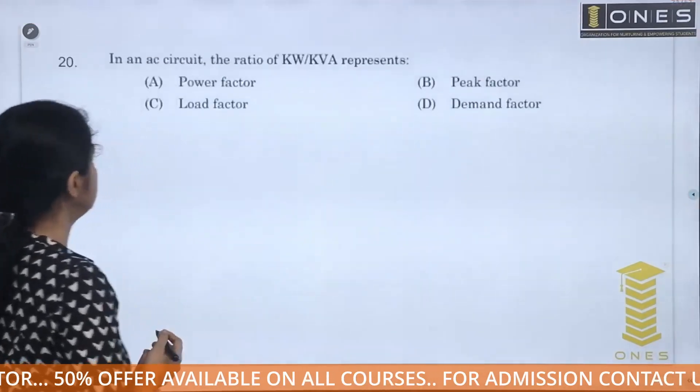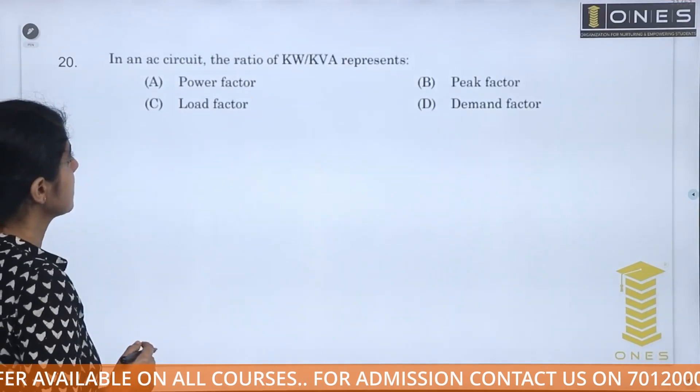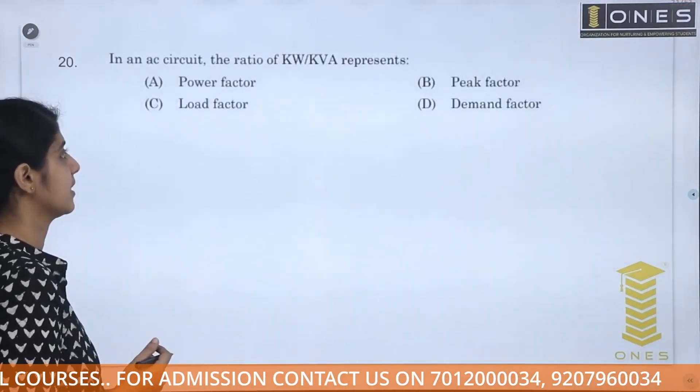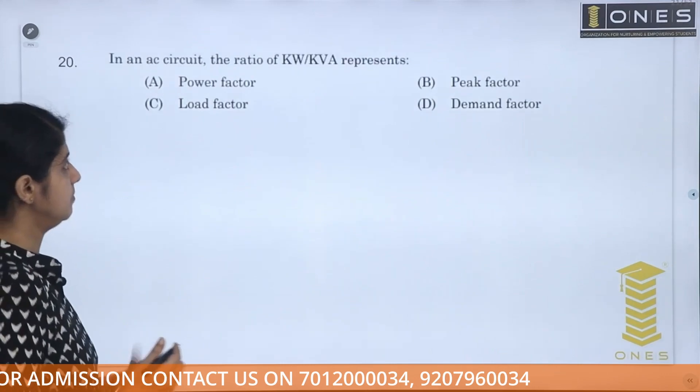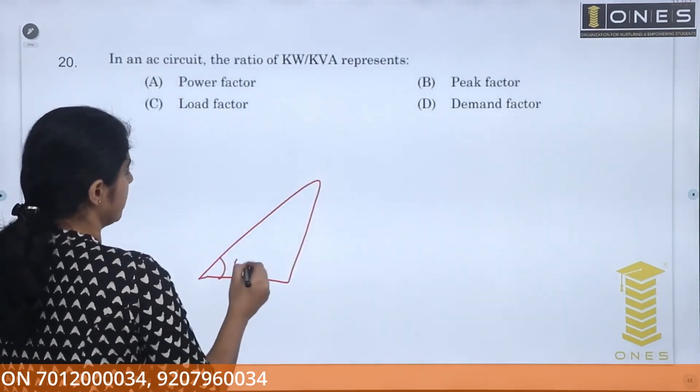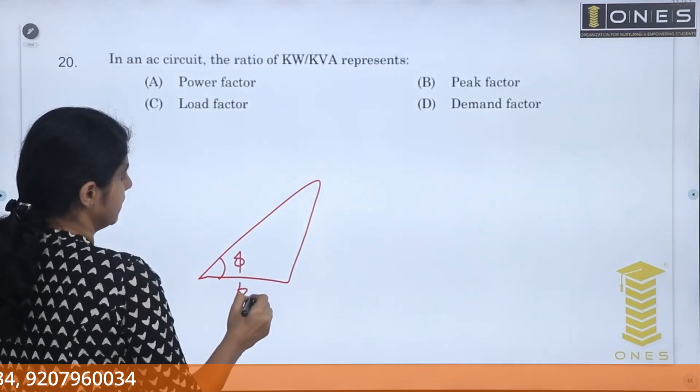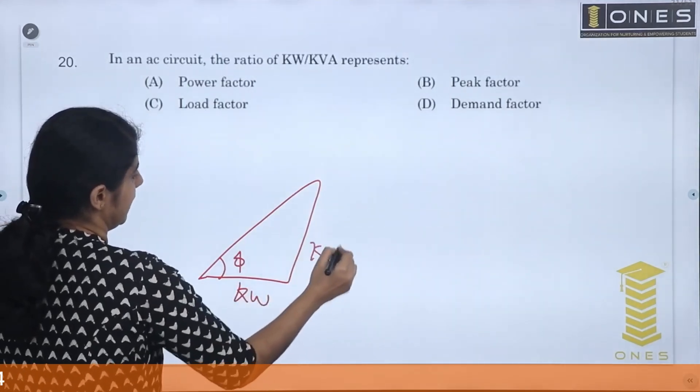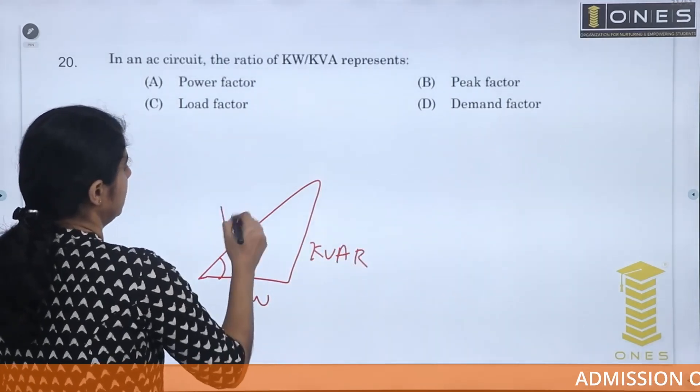Next question. In an AC circuit, the ratio of kW by kVA represents? Now we see the impedance triangle is equal to power triangle. This is phi, this is kW, this is kVAR, this is kVA.